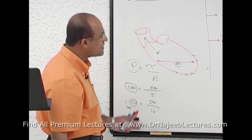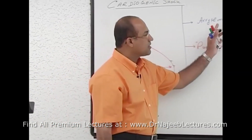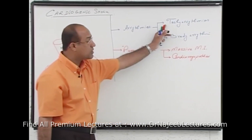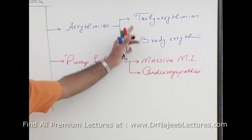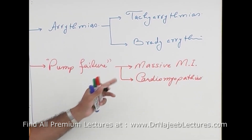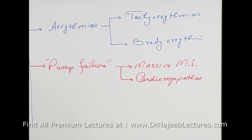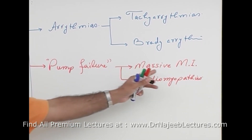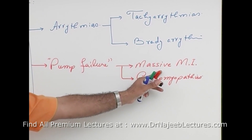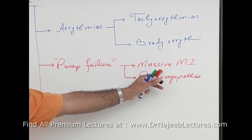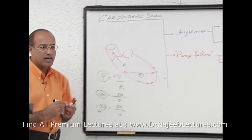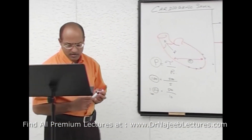So there may be severe rhythm problems — tachyarrhythmias or bradyarrhythmias — both ending in cardiogenic shock. Or there is a pump problem: either a very much dilated heart, or a hypokinetic heart where the heart is not contracting well, such as in massive MI — all leading to cardiogenic shock.